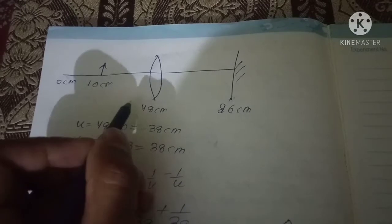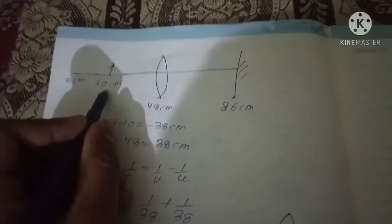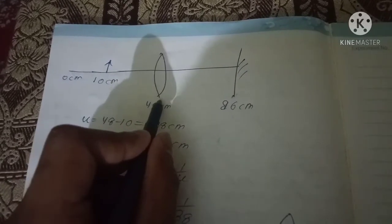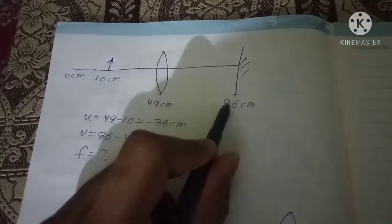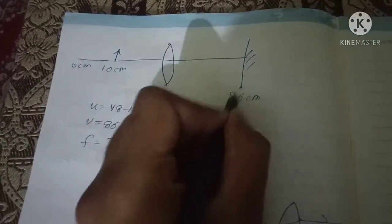In this video we are discussing the formation of image by convex lens. Now the candle is at a position of 10 centimeter, convex lens is at a position of 48 centimeter, and the screen is at 86 centimeters, which means whatever image we are getting we are getting here.